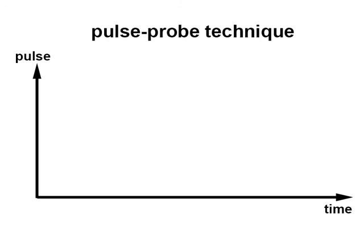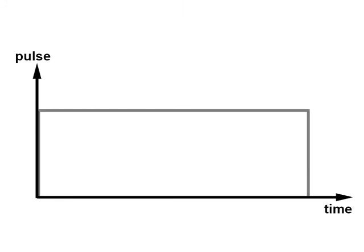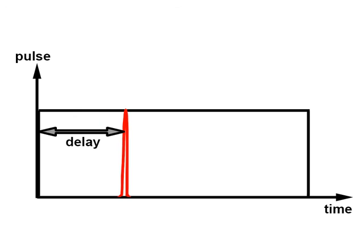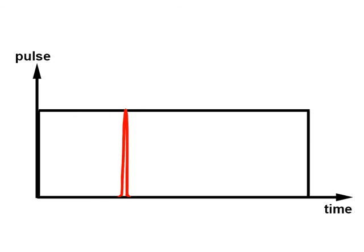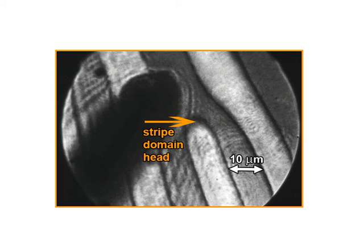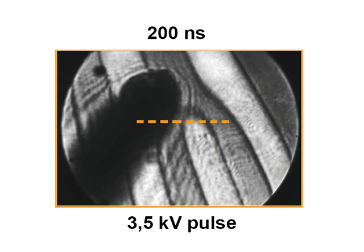To observe the dynamics of the domain wall, we use the pulse-probe technique. The step-like pulse of the electric field is followed by the probe pulse of laser illumination. By varying the delay time, we can observe the consecutive phases of motion. Here we see the propagation of the stripe domain head.